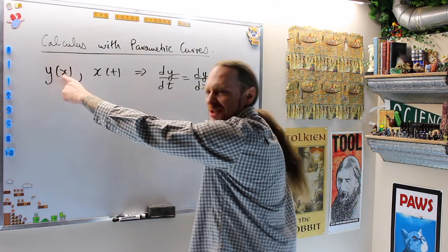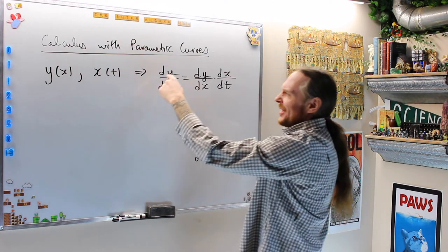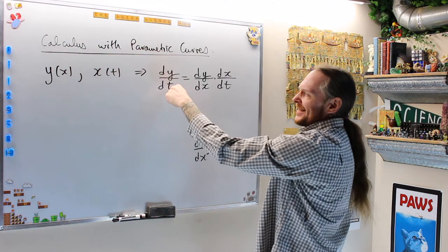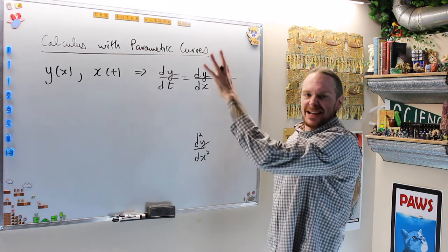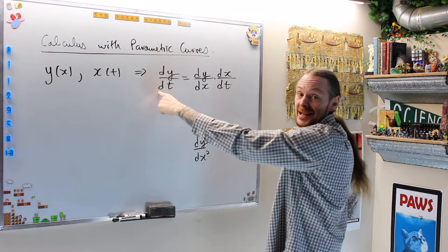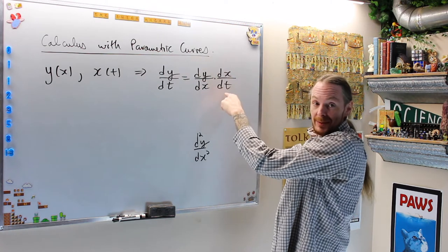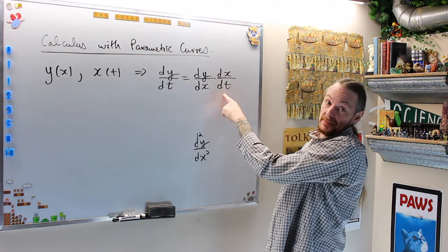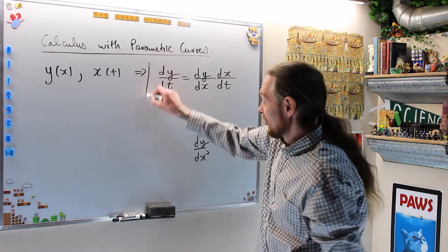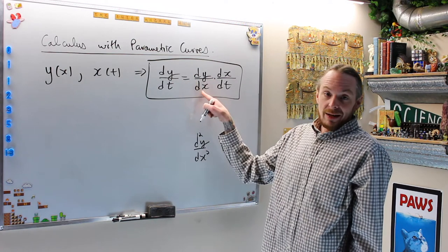We're going to say y is a function of x, and then x is a function of t. If I want to take dy/dt, that's inside-outside functions in Leibniz notation. To take the derivative of dy/dt, that will be the derivative of the outside, evaluate the inside, times the derivative of the inside with respect to t. So I get the chain, this is the chain rule.